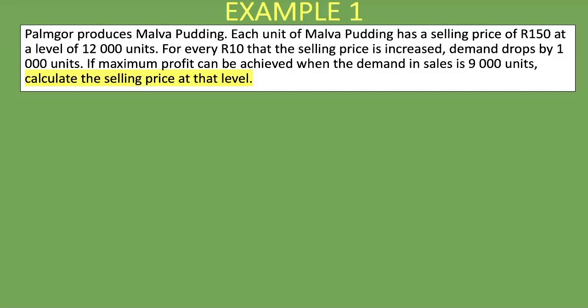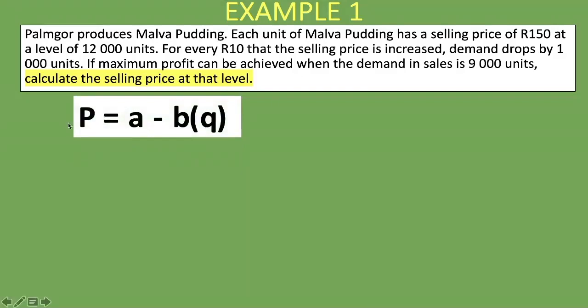Let's begin. We bring up the formula: the optimal selling price P equals A minus B times Q. In our case, the change in price is 10 rand divided by the change in demand of 1,000 units, giving us B = 10/1,000. We now work with the given information to get our answer — we want the selling price that will cause us to sell 9,000 units.